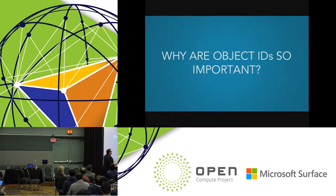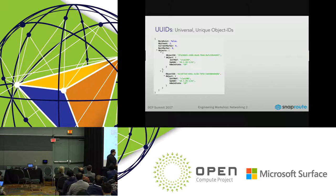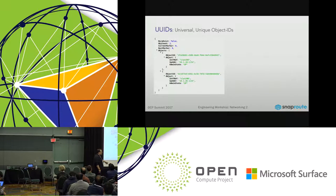Why are object IDs important? They give you a unique way of identifying different objects in the system. Every single object — an IP address, a port, a route, a BGP neighbor, anything you'd have on a device — has an object ID that is unique and programmatically generated.